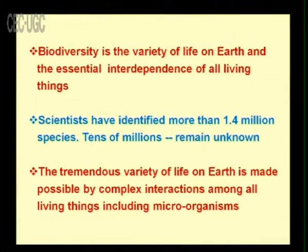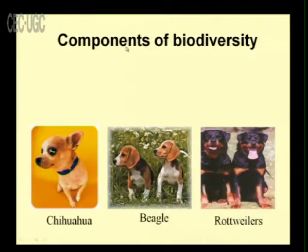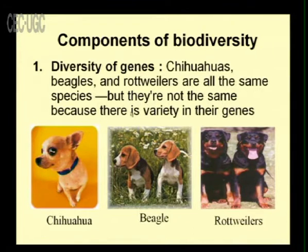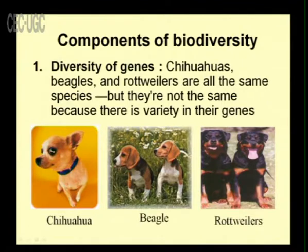Only 1.4 million organisms have been found so far, and tens of millions are still unfound. The first component of biodiversity is the diversity of genes. For example, three varieties of dogs — Chihuahuas, Beagles, and Rottweilers — are all the same species, but there is variety in their genes. Even though all three are dogs, there is a difference between their genes, making genetic diversity the first component of biodiversity.